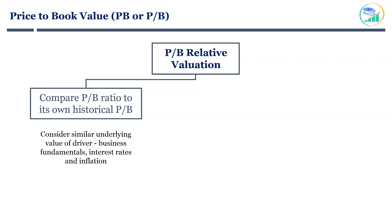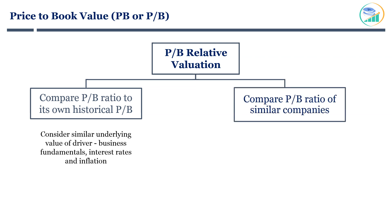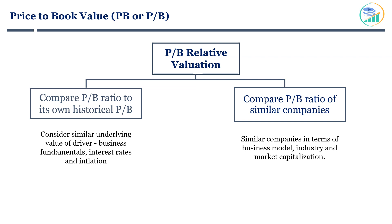The other way to use PB is to compare price to book value of similar companies. The companies should be similar in terms of business model, industry, and market capitalization. A stock can be considered cheap when it's trading at a low PB compared to competitors. You should use relative valuation with a great deal of caution, making sure you are comparing very similar businesses and historical multiples with similar underlying drivers of value.